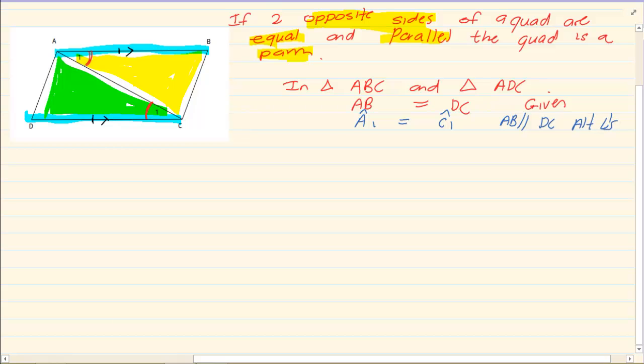Then we have that AC is equal to AC. It is common—it is in both triangles. Therefore we can say that triangle ABC is congruent to triangle ADC. Why is it congruent? Side angle side.